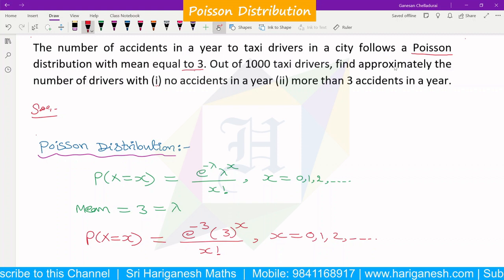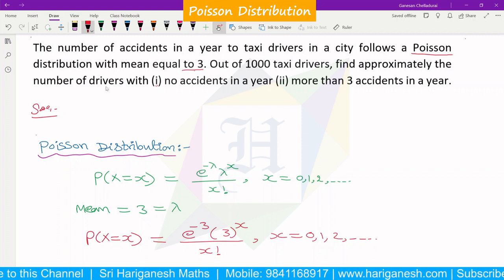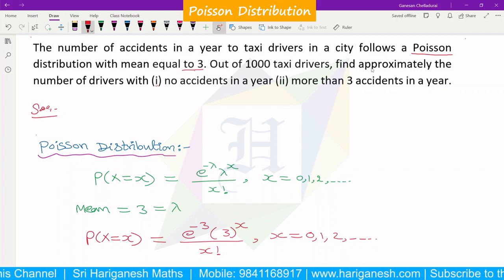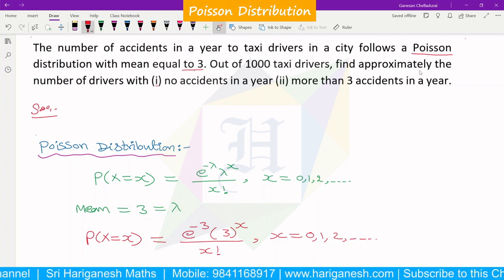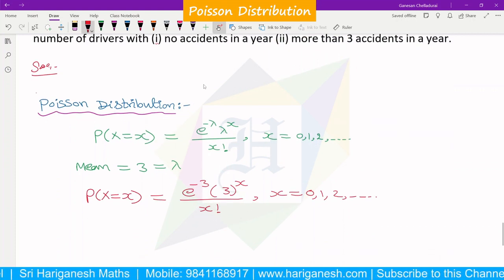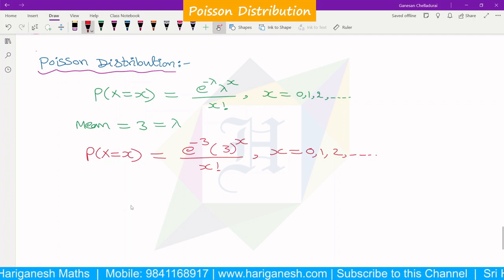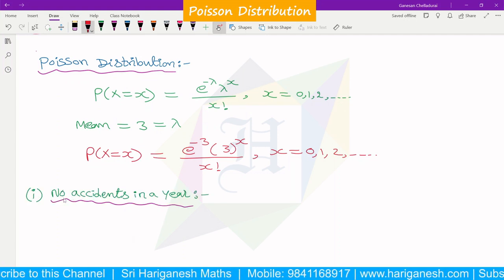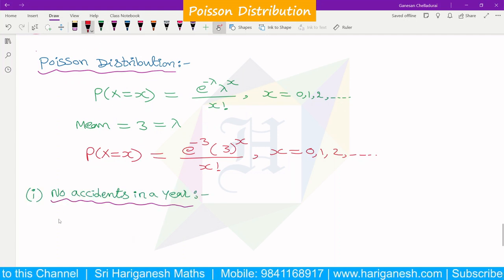So let's solve this one by one. First find approximately the number of drivers with no accidents. No accident means x=0. So if we need no accidents in a year, what do we calculate?